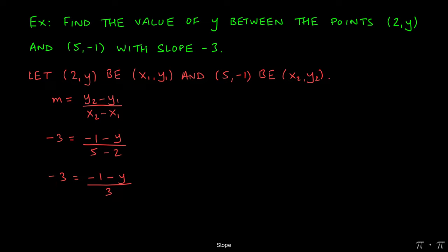So -3 times 3 now equals -1 - y. This can be simplified into -9 from -3 times 3 equals -1 - y.